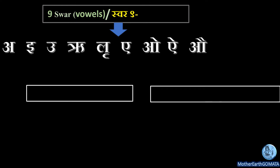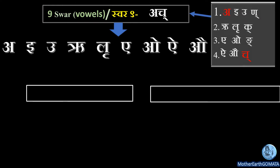In Sanskrit, Swar is known as 'Ach'. Why is it known as Ach? Because Ach is a Pratyahar which encompasses the nine Swar of Sanskrit Varna Mala. What is a Pratyahar, I will cover in detail in my next video. As of now, just understand that Ach is a Pratyahar which has the nine Swar of Sanskrit Varna Mala.